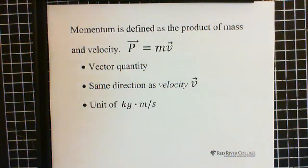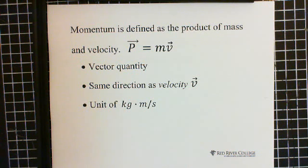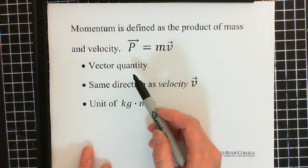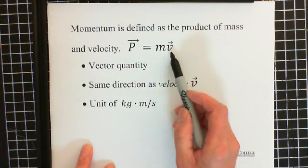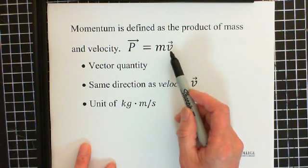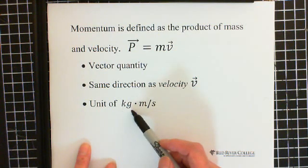Momentum is defined as the product of mass and velocity. We use p to represent momentum: p equals m times v, where m is mass and v is velocity. Because mass is a scalar and velocity is a vector, momentum is also a vector. The direction of momentum is the direction of velocity. The unit of momentum is kilogram multiplied by meter per second.